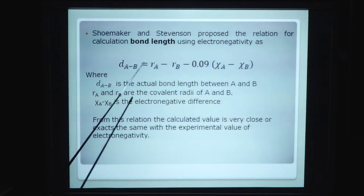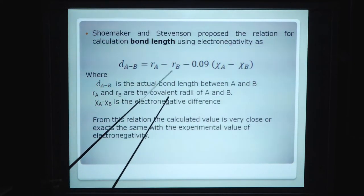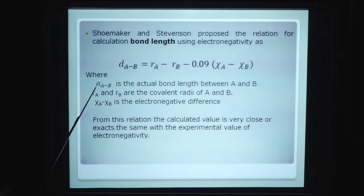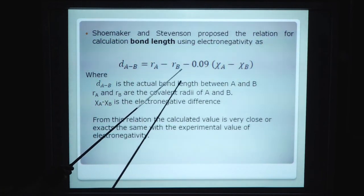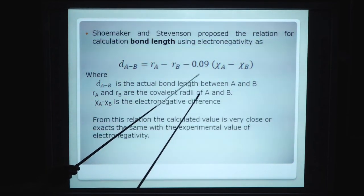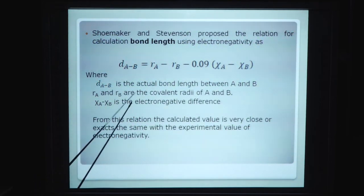Shoemaker and Stevenson proposed the relation for calculation of bond length using electronegativity as D-AB. The bond length equals R-A plus R-B minus 0.09(chi-A minus chi-B), where D-AB is actual bond length between A and B, R-A and R-B are the covalent radii of A and B, and chi-A minus chi-B is the electronegativity difference. From this relation, the calculated value is very close to the experimental value.